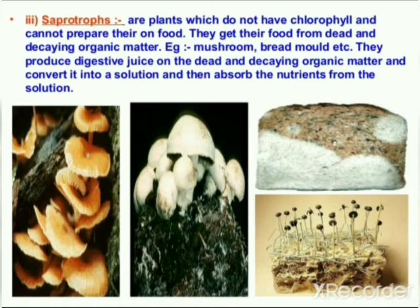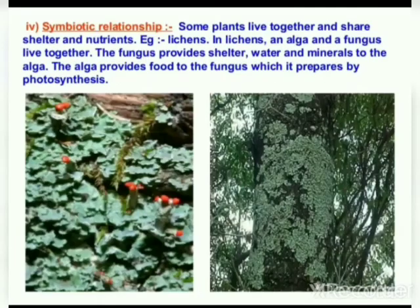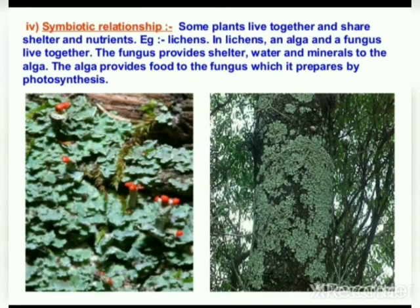Our last category is the symbiotic relationship. Some plants live together and share shelter and nutrients. An example is lichen. In lichen, an alga and a fungus live together. The fungus provides shelter, water, and minerals to the alga. The alga provides food to the fungus, which it prepares through photosynthesis.